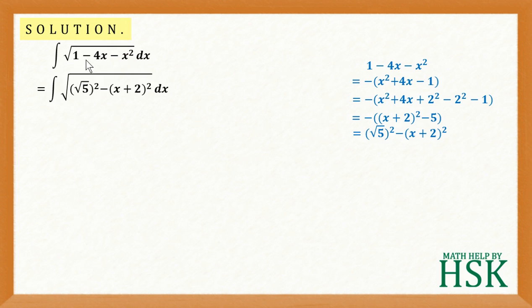I'm going to obtain the integration of the original function as equal to the integral of square root of root 5 squared minus x plus 2 whole squared with respect to x. Now I'm going to substitute to make it simpler.